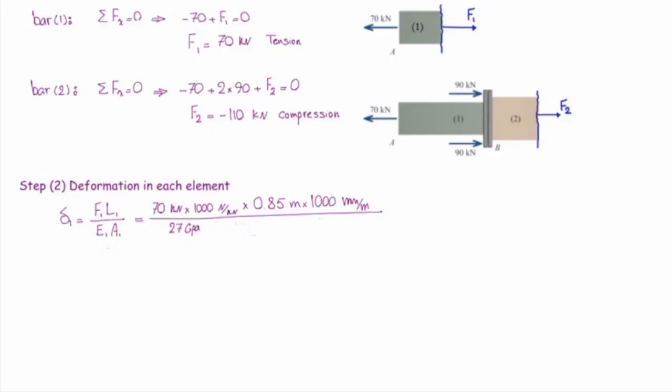Modulus of elasticity is 27 GPa. Again, I need to convert that into megapascal. So, I'm going to multiply that by 1000 megapascal over gigapascal. And finally, area, which is given in this case, and that's 750 square millimeter. Now, I can determine the total deformation.